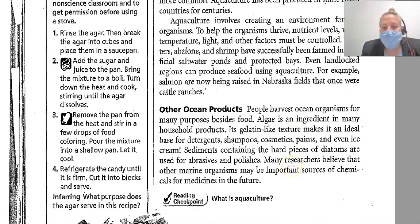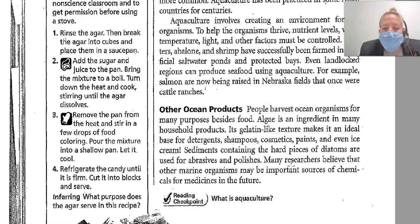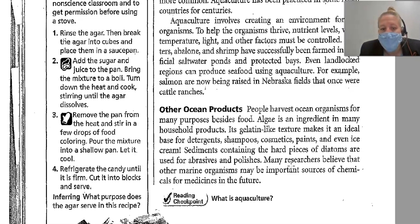People harvest ocean elements for many products besides food. Algae is an ingredient in many household products — its gelatin-like texture makes it an ideal base for detergents, shampoos, cosmetics, paints, and even ice cream. Sediments containing the hard pieces of diatoms are used for abrasives and polishes. Many researchers believe that other marine organisms may be important sources of chemicals for medicine in the future.